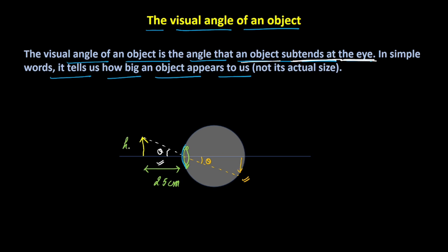So, let's say the height of the object is H0. We can say in this particular situation, tan theta would be equal to H0 divided by 25 cm.